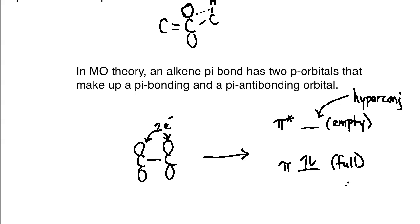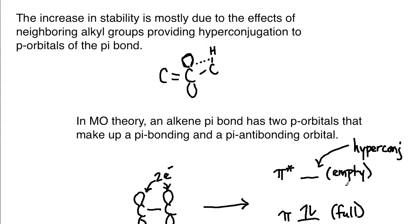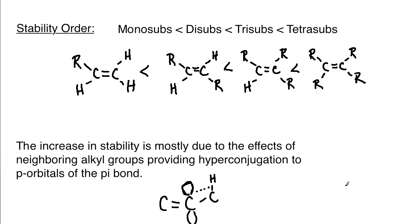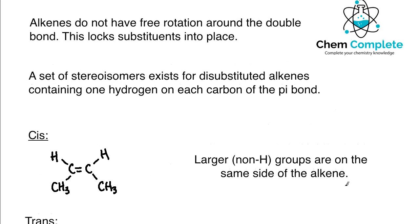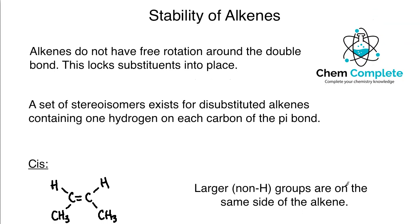That pretty much covers stability of alkenes. You really want to understand that larger groups locked in place prefer to be away from one another in a cis-trans pattern, and that as alkyl groups increase around the double bond, you get greater stability due to hyperconjugation effects surrounding the p orbitals. Thank you so much for learning with ChemComplete today. Like the video if it helped, comment any questions, and subscribing is your best bet for staying up to date throughout your chemistry journey. Hope everybody has a great rest of the day — see you in the next lecture.